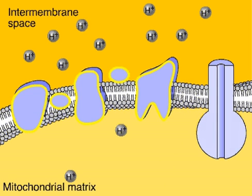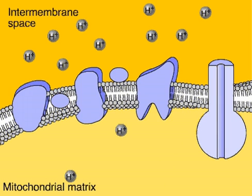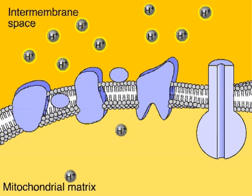The electron transport chain has used the energy of moving electrons to pump hydrogen ions into the intermembrane space. This buildup of hydrogen ions, like water behind a dam, stores the potential energy that was originally in the bonds of glucose molecules.